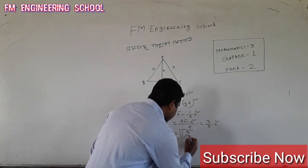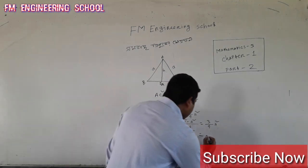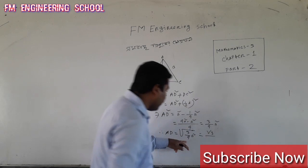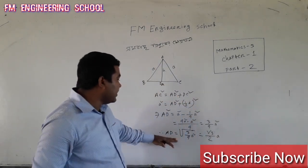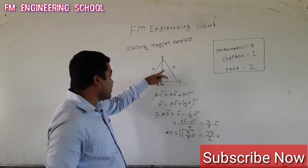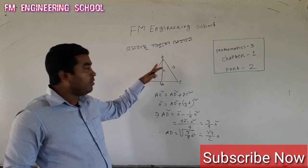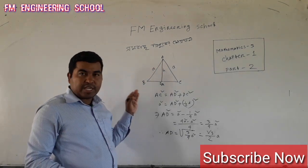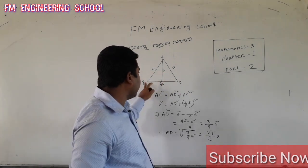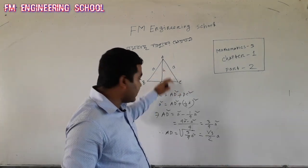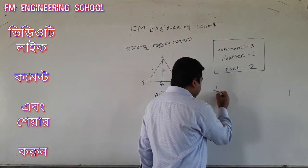We are doing square root 3 and root 3 is 2, and A square root 2A — I mean AD means root 3 by 2A. So we are doing A square root 3A. We know A square root 3 and root 3A.